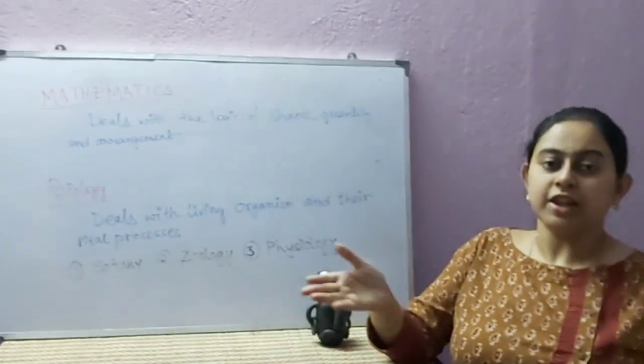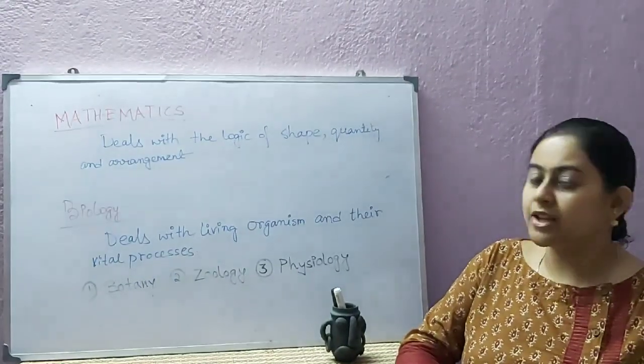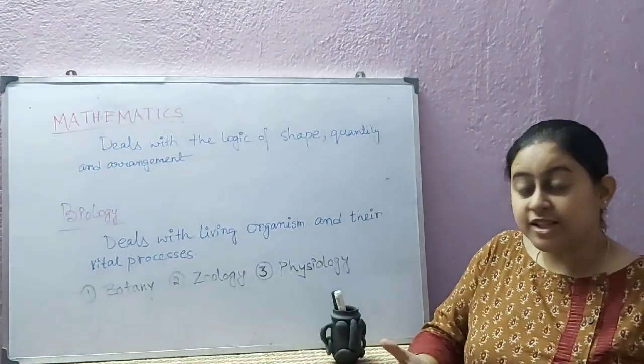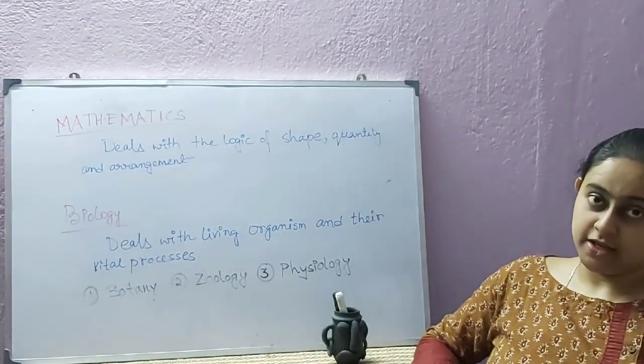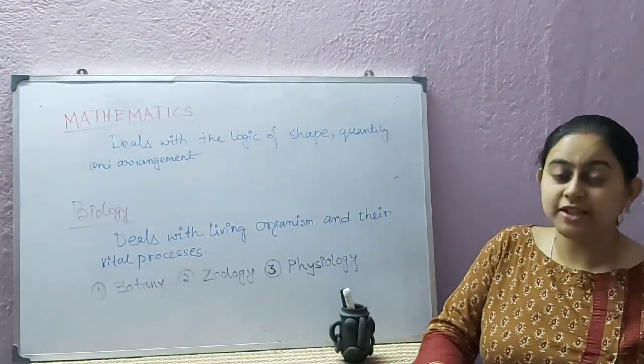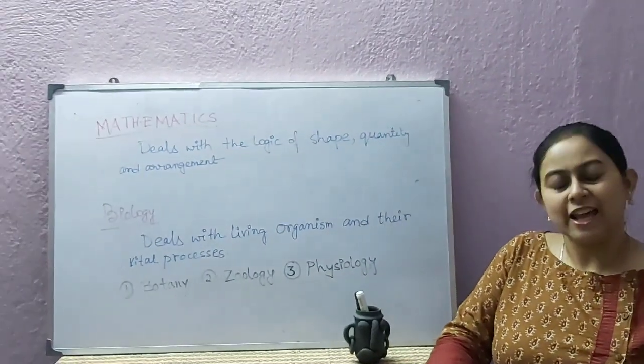Other than chemistry and physics we have mathematics and biology. Mathematics deals mainly with the logic of shapes, quantity, and arrangements. Branches of mathematics are algebra, arithmetic, geometry, trigonometry, mensuration, etc.